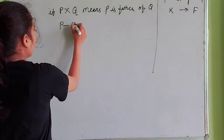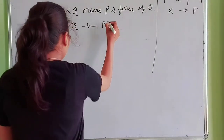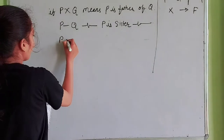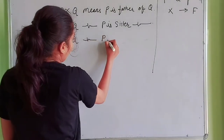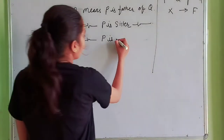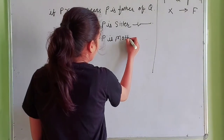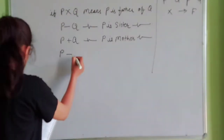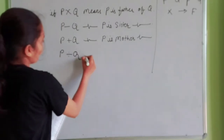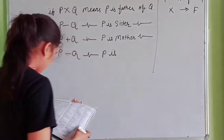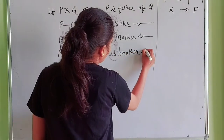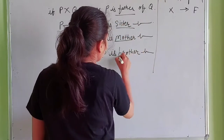P − Q means P is sister of Q. P + Q means P is mother of Q. P ÷ Q means P is brother of Q. So the four operations: father, sister, mother, brother.